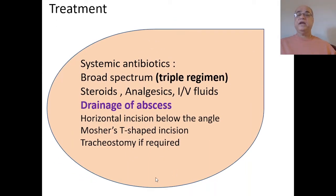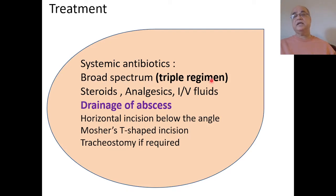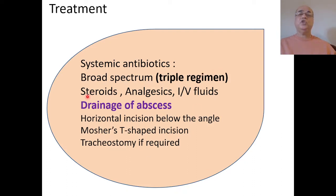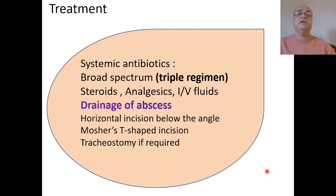Treatment begins with systemic antibiotics. Because there will be mixed flora, we go for a triple regime: intravenous high-dose antibiotics covering gram-positive bacteria using penicillin and its derivatives or first-generation cephalosporins; third-generation cephalosporins to cover gram-negative bacteria; and metronidazole for anaerobes. Steroids are given to reduce inflammation, strong analgesics may be required, and intravenous fluids are needed for hydration since the patient will be dehydrated due to odynophagia.